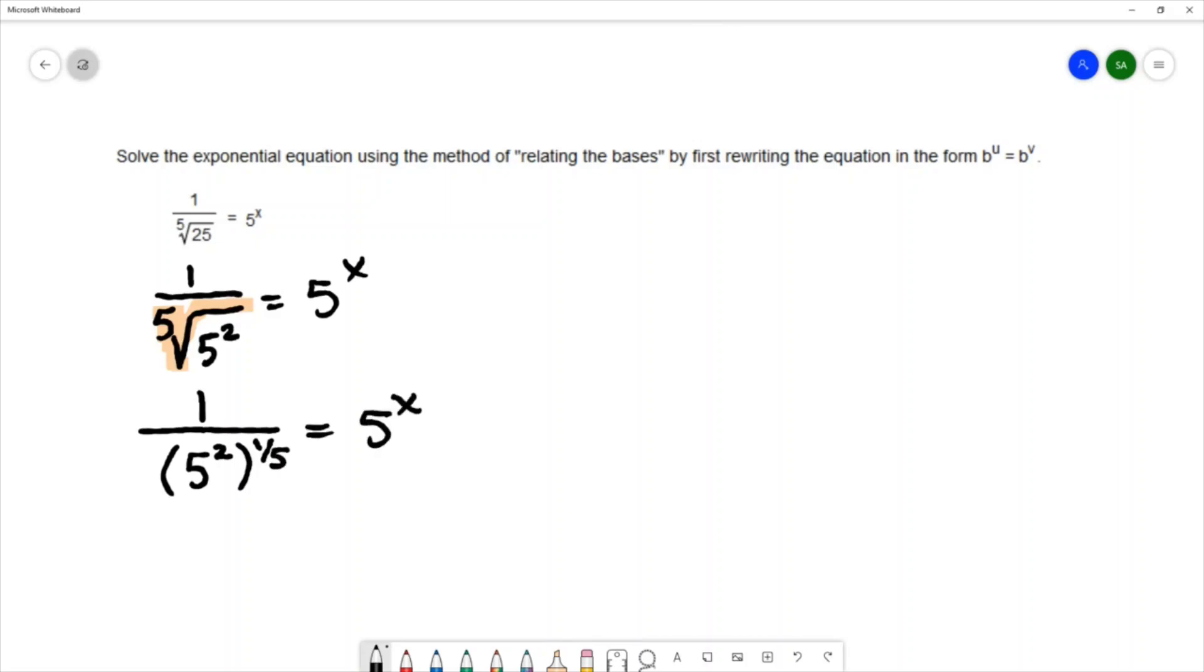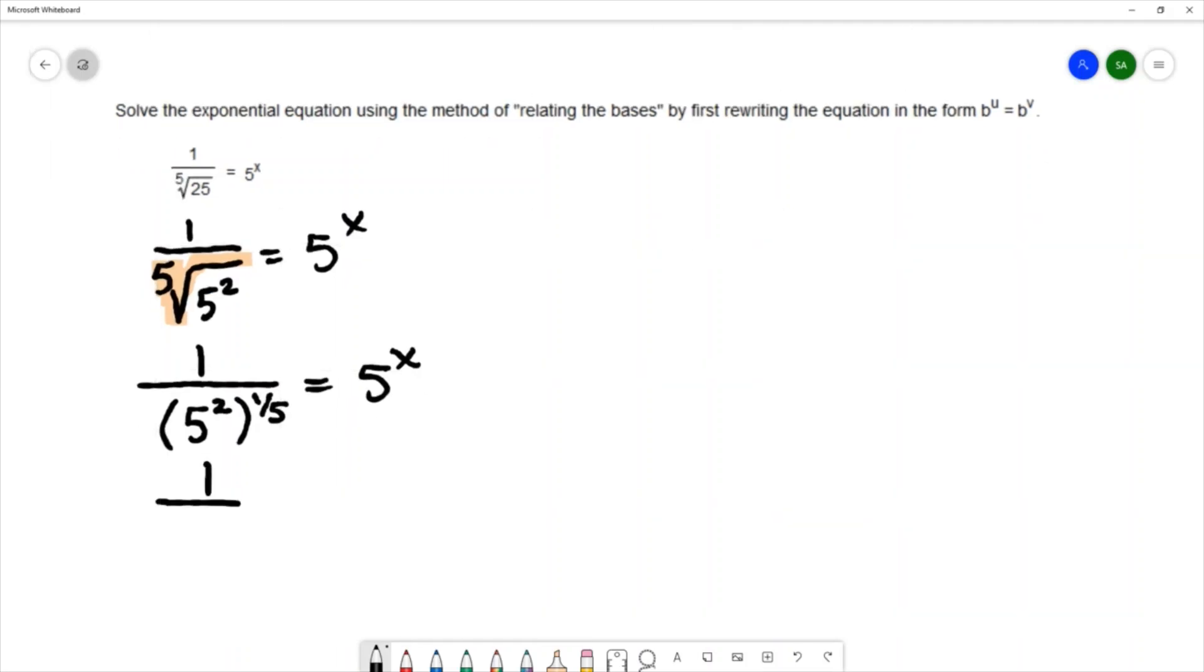I can simplify this using the power rule. The power rule for exponents allows me to multiply these powers together to get 1 over 5 to the 2/5ths power.